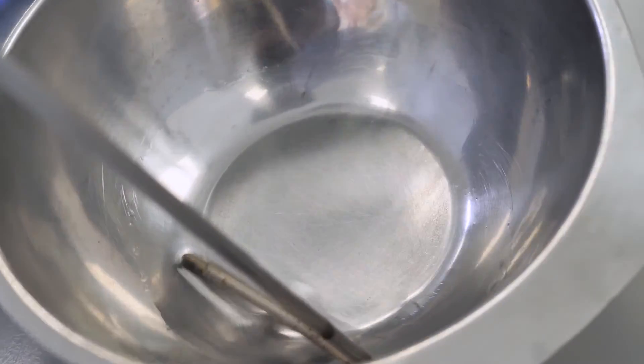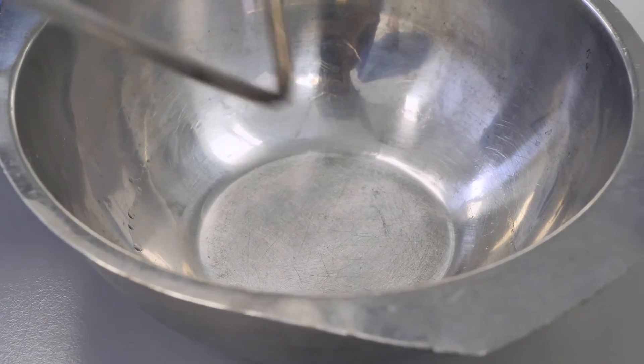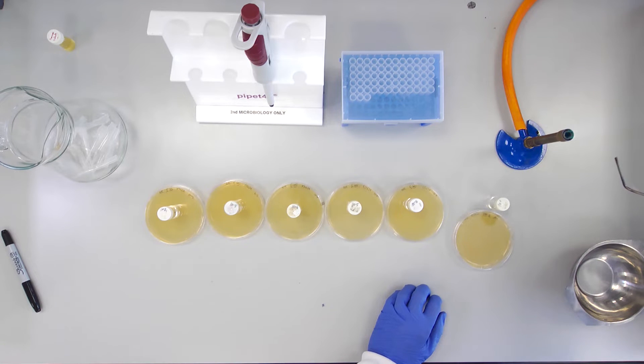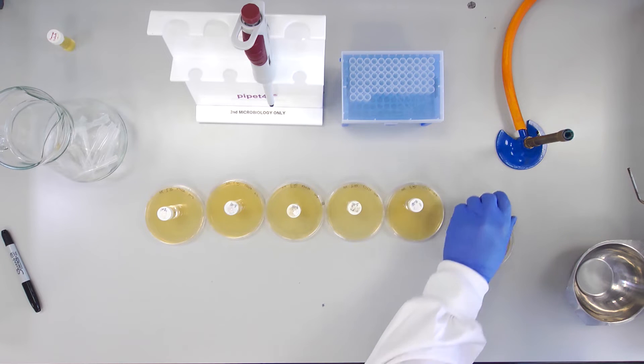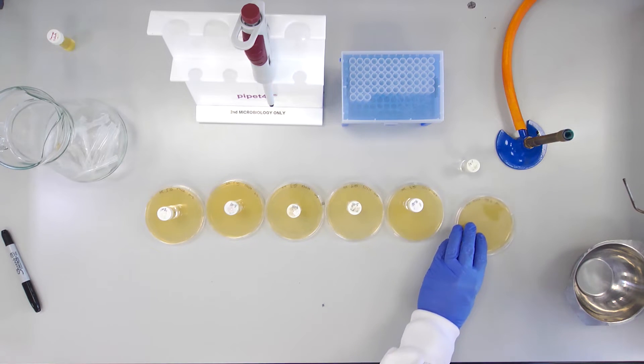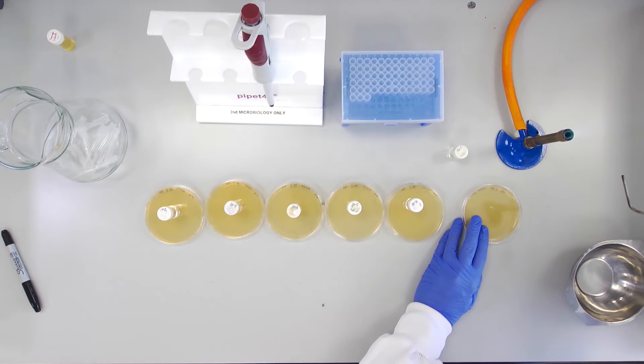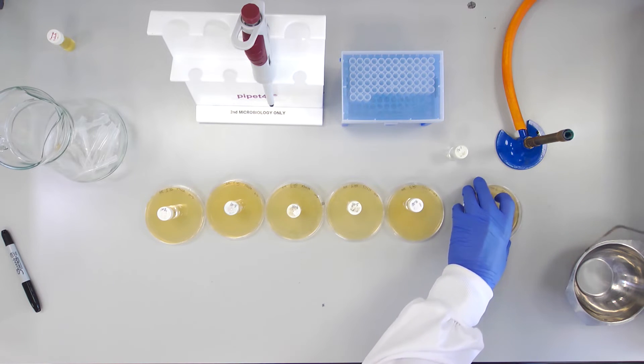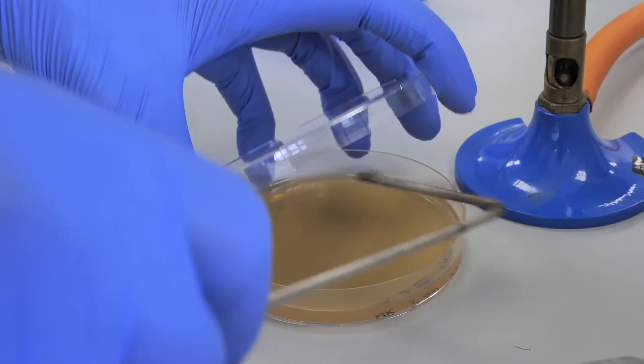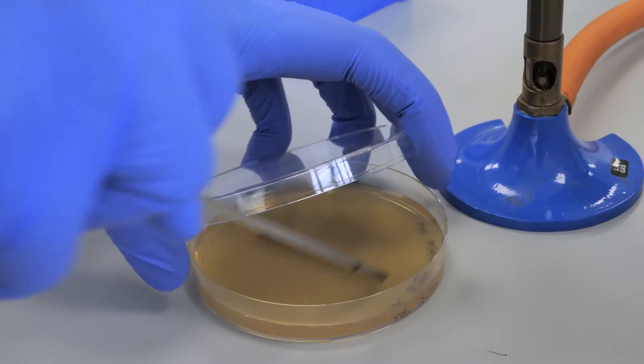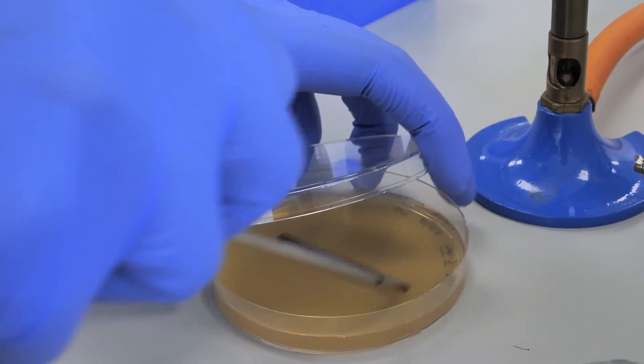Dip a steel spreader in alcohol and pass it through the flame. Remove and allow the alcohol to burn off while holding the spreader close to the flame. Allow the spreader to cool and then use it to spread the liquid culture over the entire surface of the agar as shown.